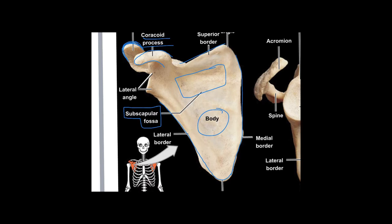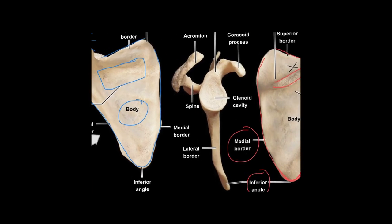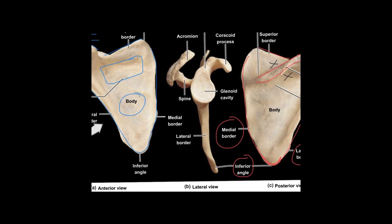On the lateral side of the scapula is the area where the humerus fits in to create the shoulder socket. Looking in at the scapula with the humerus removed, you can see the glenoid cavity — that's where the humerus fits. That's where the capsule goes around it, and if you dislocate the shoulder, the humerus pops out of the glenoid cavity.